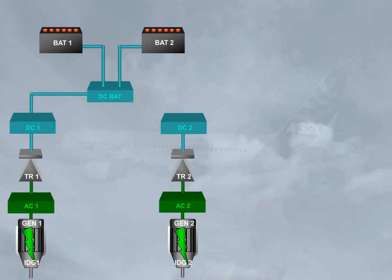The electrical system also includes two essential buses. The AC essential bus is normally fed by AC bus 1. If AC bus 1 is lost, AC bus 2 automatically takes over. The DC essential bus is fed by DC bus 1 via the DC bat bus.